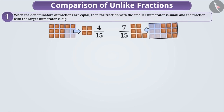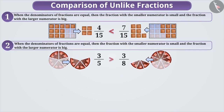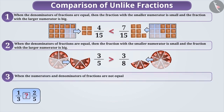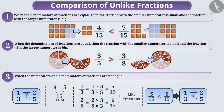Thus, we can say that when the denominators of fractions are equal, then the fraction with the smaller numerator is small and the fraction with the larger numerator is big. When the numerators of fractions are equal, then the fraction with the smaller denominator is big and the fraction with the bigger denominator is small. When the numerators and denominators of fractions are not equal, then take the LCM of the denominators, convert the fractions into equivalent fractions, thus making denominators equal and compare their numerators.